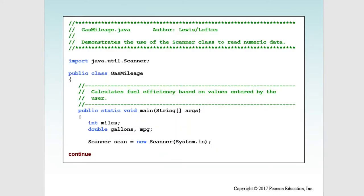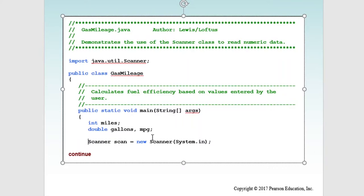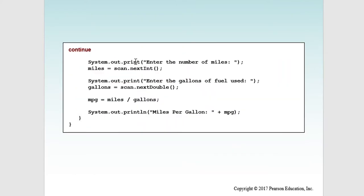Here's another example called gas mileage. They declared an integer named 'miles' and a double named 'gallons' and 'mpg'. Note that they did have to import the Scanner class. Once imported, they instantiated a Scanner object that listens to the keyboard. They prompt the user to enter the number of miles, scan in the next integer and store it into 'miles'. Then they ask for gallons of fuel used, scan it as a double, divide miles by gallons, and store the result into 'mpg'. Then they output the mpg.